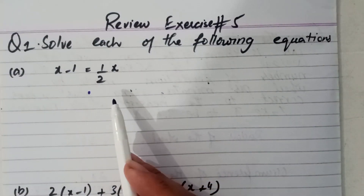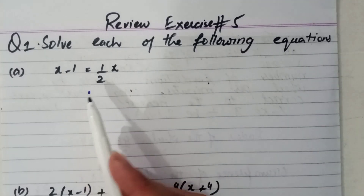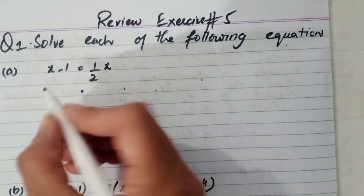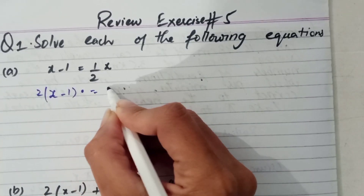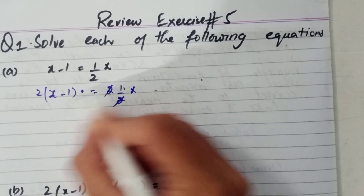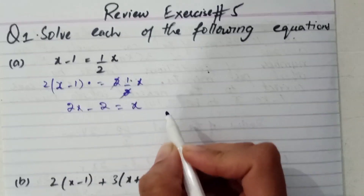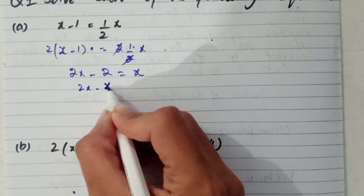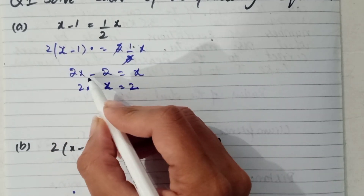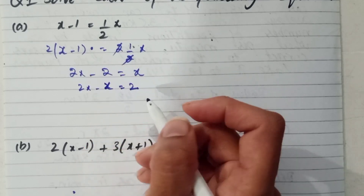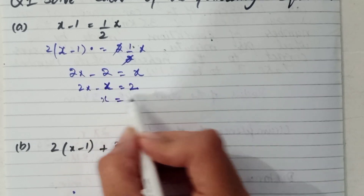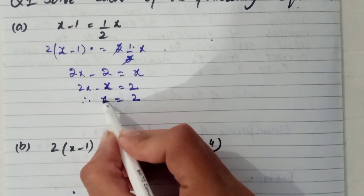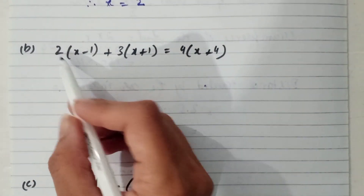Question number one: solve each of the following equations. These are linear equations we have to solve. For part a, to eliminate the 2 from the denominator, we multiply the equation on both sides by 2 and we get 2x minus 2 is equal to x. We change the position of x: 2x minus x equals 2. The negative 2 becomes positive, so x is equal to 2. That is the answer of part a.